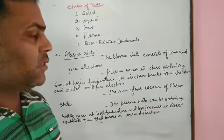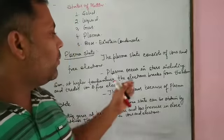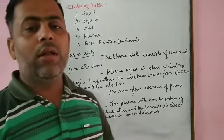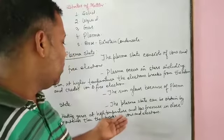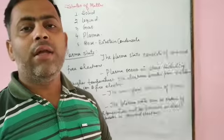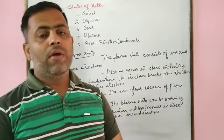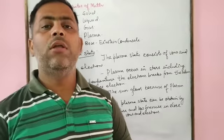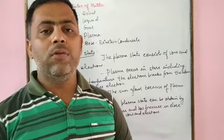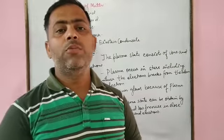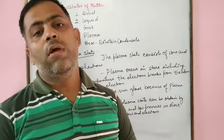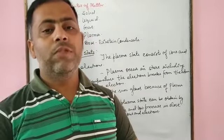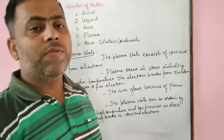This occurs in the case of stars, including the sun. At higher temperatures in stars, the electrons break away from atoms and form ions and electrons. This state can also be achieved on Earth when gas is heated at higher temperature and lower pressure. For example, when a fluorescent tube containing helium or neon gas has electricity passed through it, the tube glows due to the formation of ions and electrons, which excite by absorption of energy and de-excite by radiation of visible light. This is also an example of the fourth state of matter, plasma.